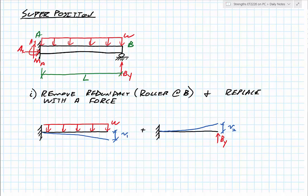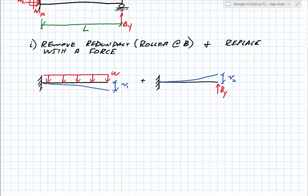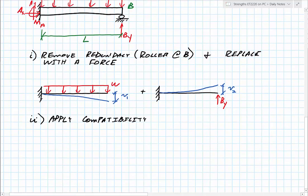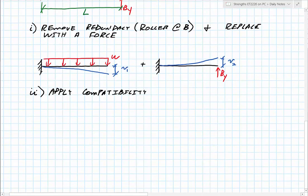Now after I have that first part done, I want to apply my compatibility condition. And from compatibility, what I'm doing is I'm saying, well, what do I know about the deflection at point B? Well, because point B is a solid surface here on that roller, it can't go anywhere. So I know that my total deflection at B must be equal to zero. So from that, I can say my deflection from the first load scenario plus my deflection from the second must be equal to zero.